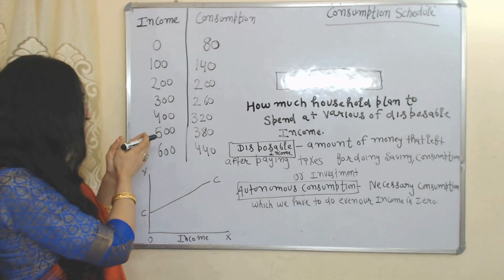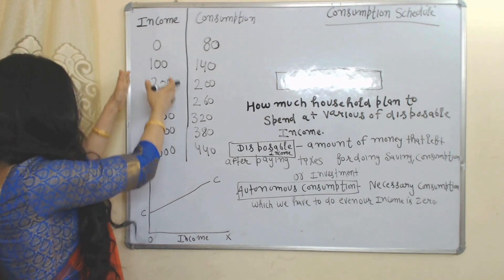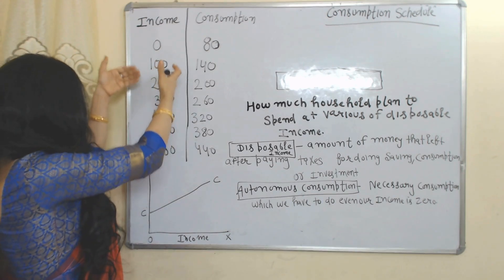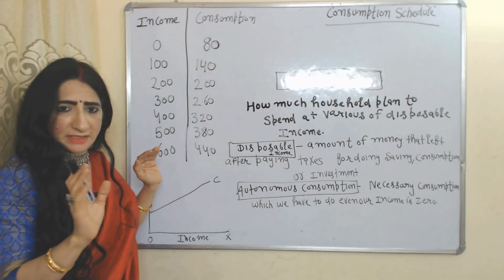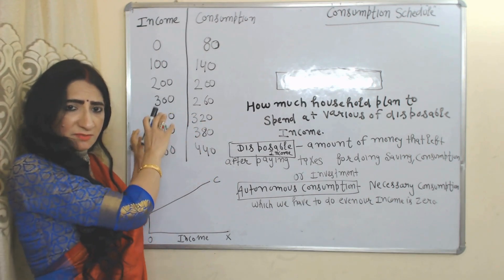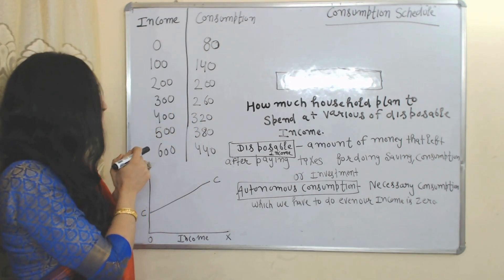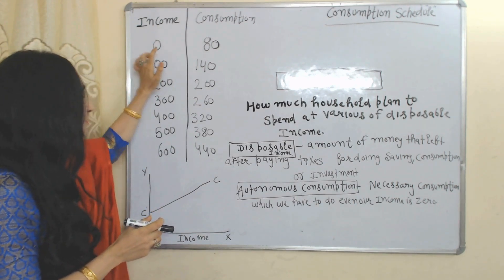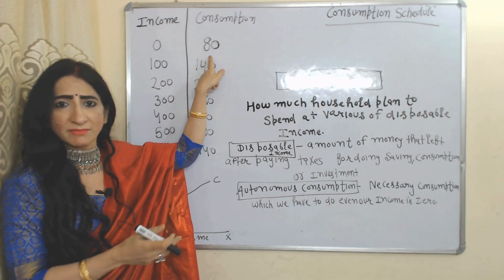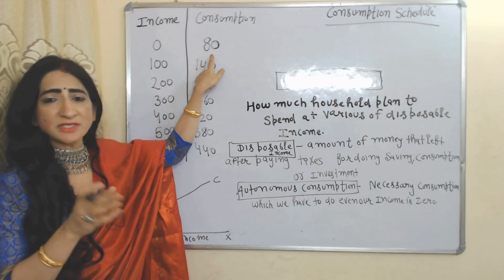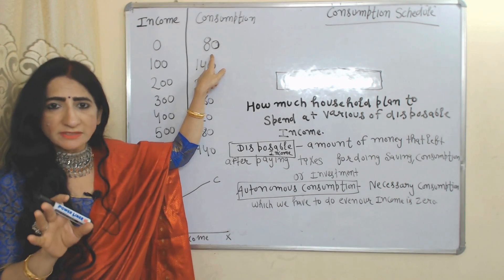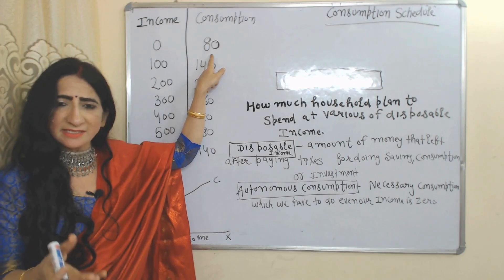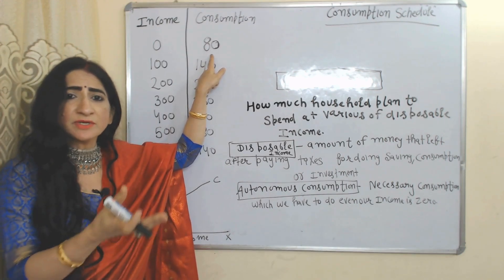This table shows how much households plan to spend at various levels of disposable income. As income increases, consumption also increases, so there is a direct relationship between income and consumption. But here you can see that at zero income our consumption is 80 — this is called autonomous consumption.